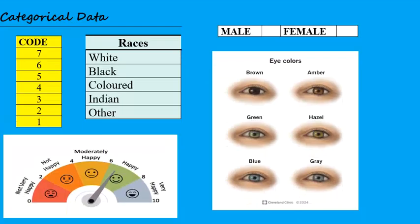Categorical data is data where there are groups, and you have to choose the category or group that you fit into. For example: your maths code for the June exam — maybe you got a code 6, so that's your category. Your race, your gender, your eye colour — there are six different eye colours and you fall into one. Or the happiness scale: you choose a category you fall into. With categorical data, there will always be a category that you must choose.